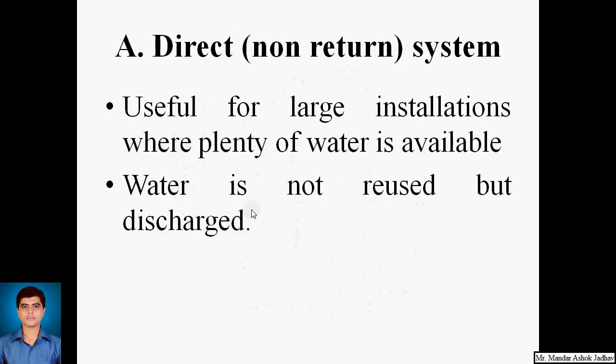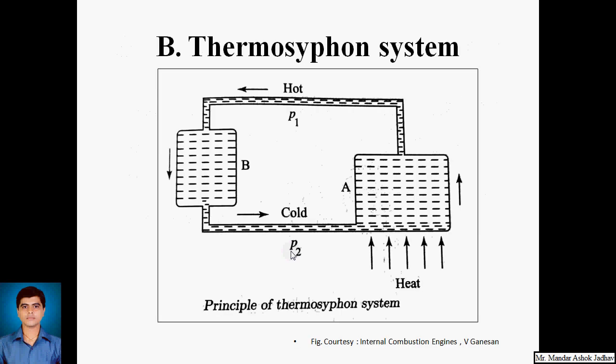The first type is the direct system, also called the non-return system. This system is useful for large installations where plenty of water is available. Water from the storage tank is directly supplied through an inlet valve to the engine cooling water jackets, and this water is not reused — it is simply discharged. Since the water is not recirculated, it is called a non-return system.